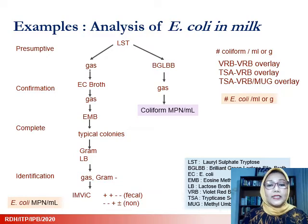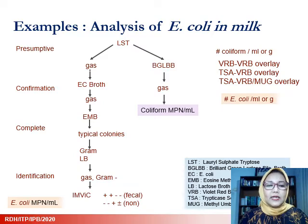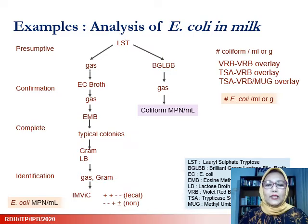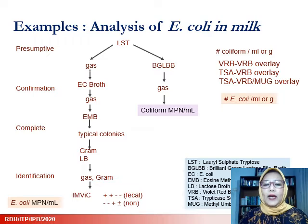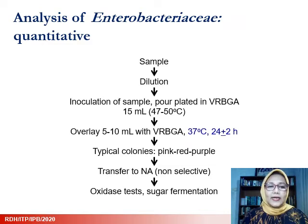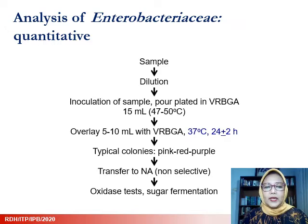This slide shows the analysis of E. coli in milk. You can see the path on the left is the complete testing from the presumptive test through to identification. You can also perform only coliform MPN by looking at gas production from lactose, or use VRB overlay to enumerate E. coli from samples. The analysis of Enterobacteriaceae also consists of several steps: dilution, inoculation on specific media, identification of typical colonies, and several biochemical tests.